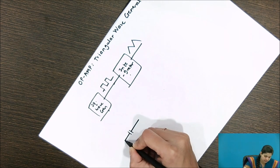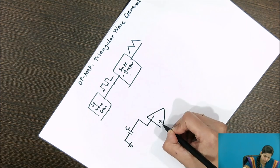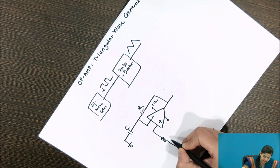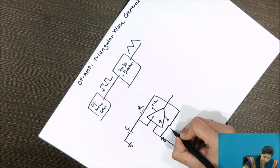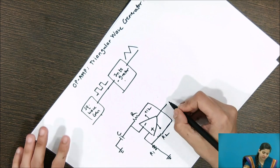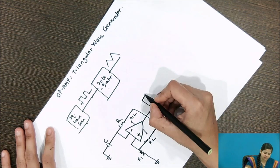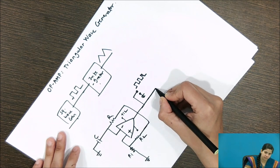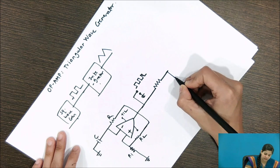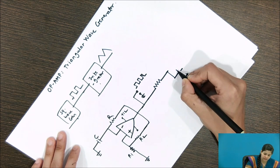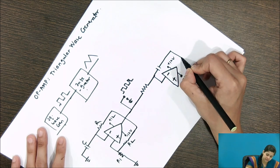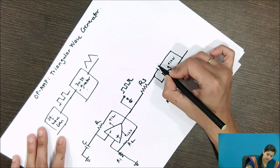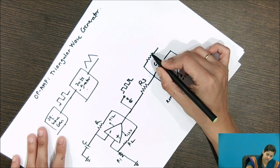First, we design a square wave generator. We connect a resistor, capacitor, and a voltage divider circuit to the non-inverting terminal — that is R2 and R1. This gives the output as a square wave. The same output then acts as the input for the next circuit, which is the integrator using an operational amplifier. We connect a capacitor, resistor R3, capacitor C2, and one more resistor R4.